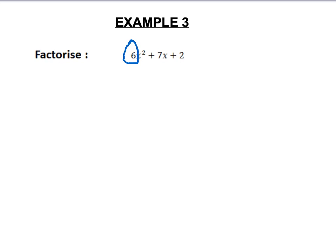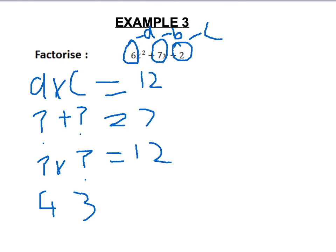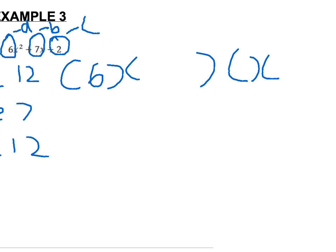We do exactly the same again with 6 as our A, and identify B and C. We therefore do A times C which equals 12. We find two numbers added together make our B which is 7, and times together make 12. These two numbers are 4 and 3. We therefore open up the brackets and have 6x and x. However, neither 4 nor 3 are divisible by the coefficients of the x's. Therefore these two numbers do not work and this will not work.